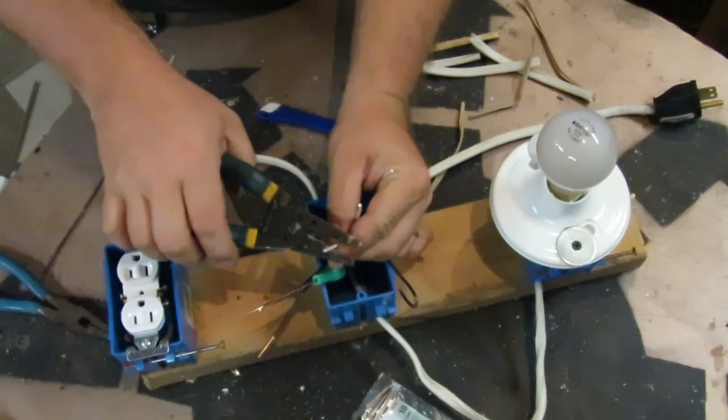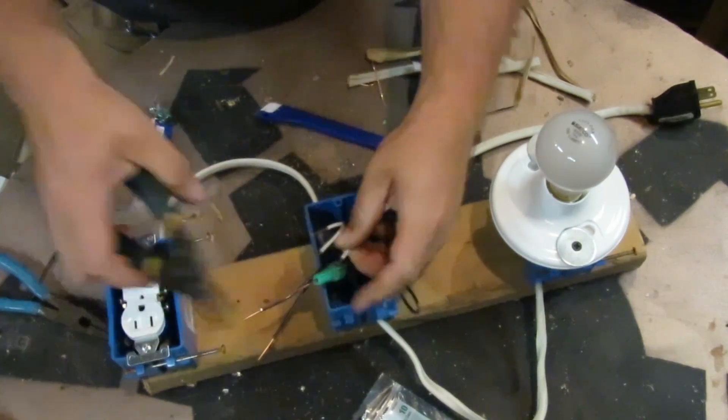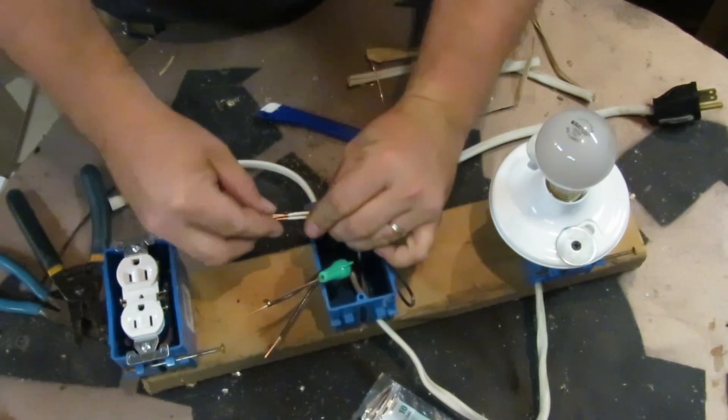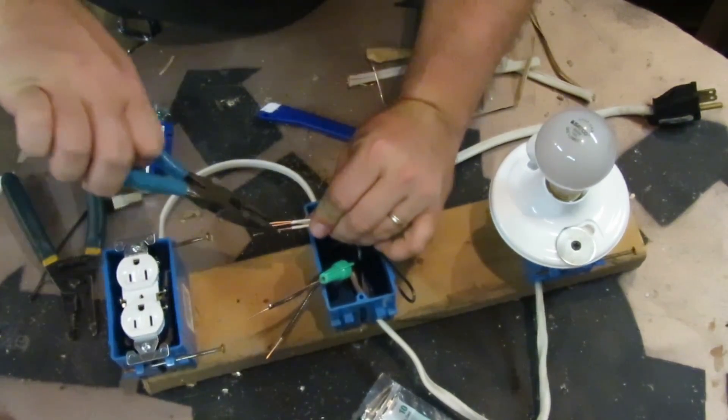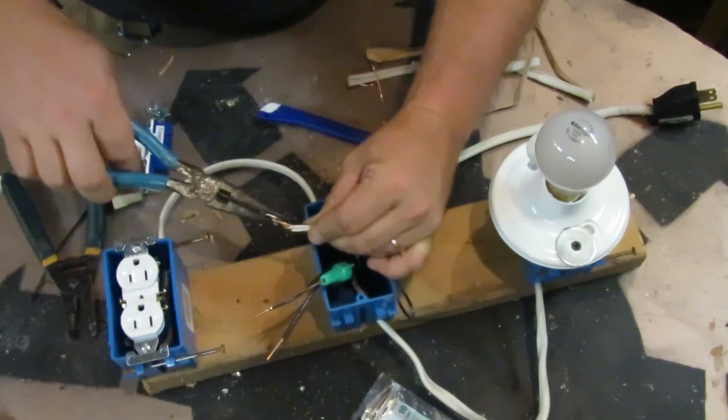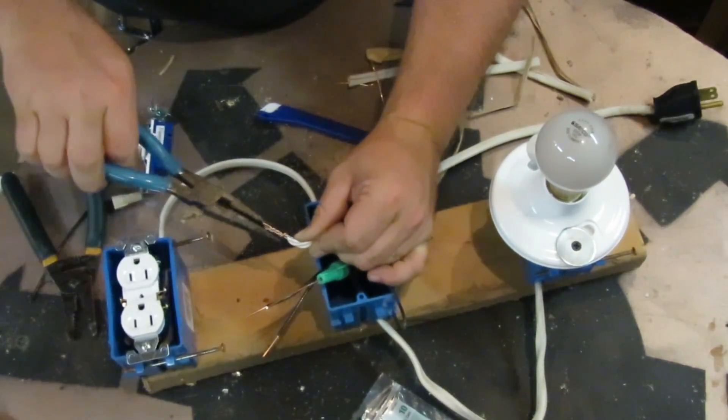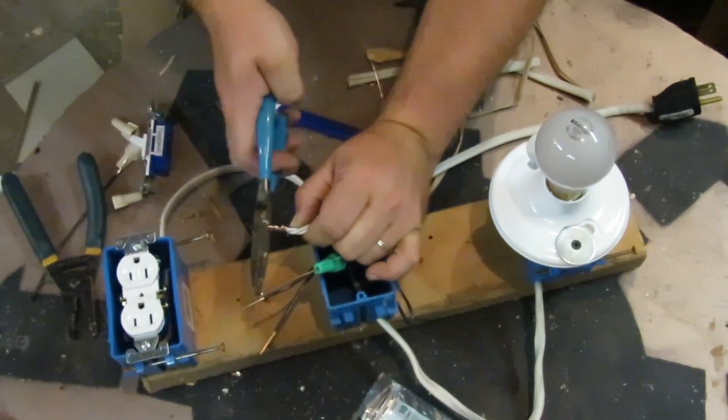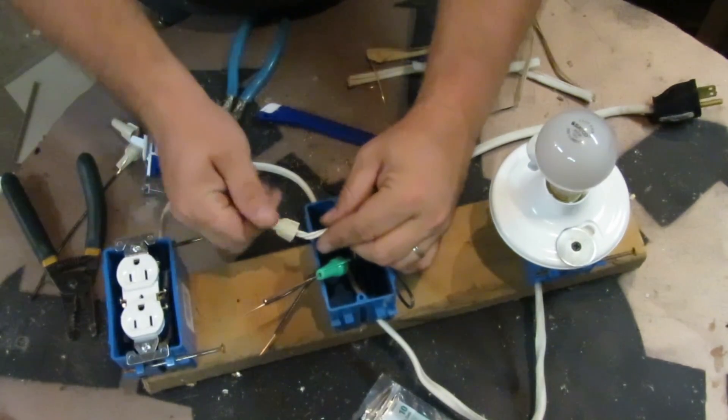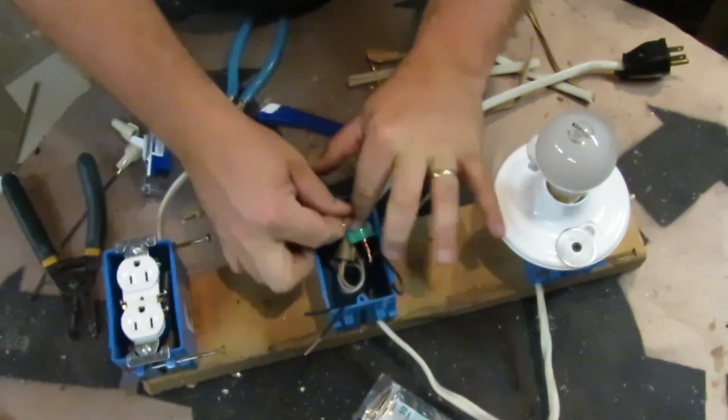You just want to strip your neutrals off and then twist the copper together. Just get a nice twist on it and trim off the ends. Then you just take a regular wire nut and twist that on. Then you just want to stuff all this into the box.